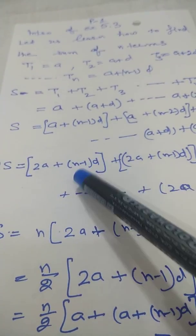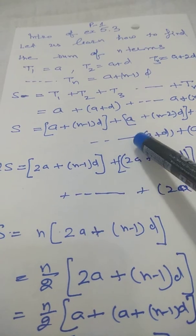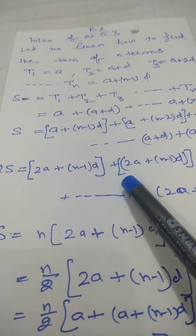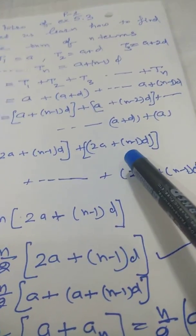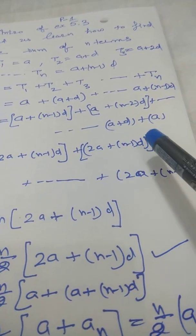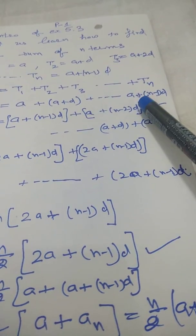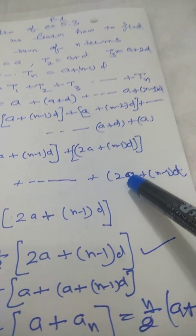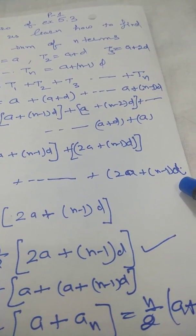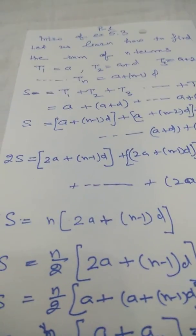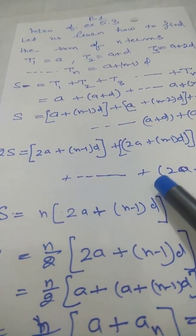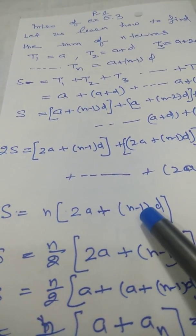Adding corresponding terms: first terms give 2a, second terms give a + d and a + (n-2)d which sum to 2a + (n-1)d, and every pair gives 2a + (n-1)d. Since there are n such terms, we get 2S = n times [2a + (n-1)d].